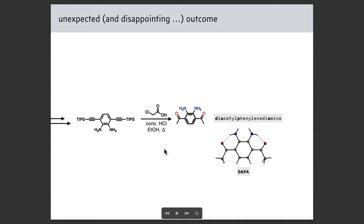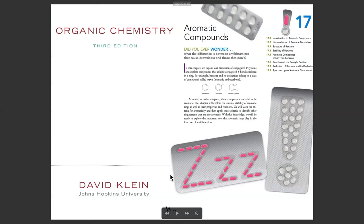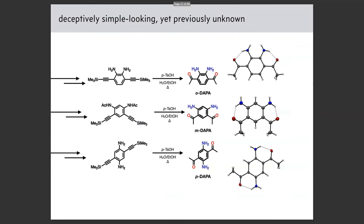If you look at this molecule you might say, 'I probably saw that in my sophomore organic chemistry textbook.' But if you look carefully in the organic chemistry literature, nobody had made it. Although there are many benzene derivatives, there was not a single example of having two acetyl groups and two amino groups positioned in this specific way. All the other isomers were also unknown. This came from a simple hydration and desilylation chemistry of TPS-protected alkynes. Obviously this is not the most obvious way to make such a simple molecule.